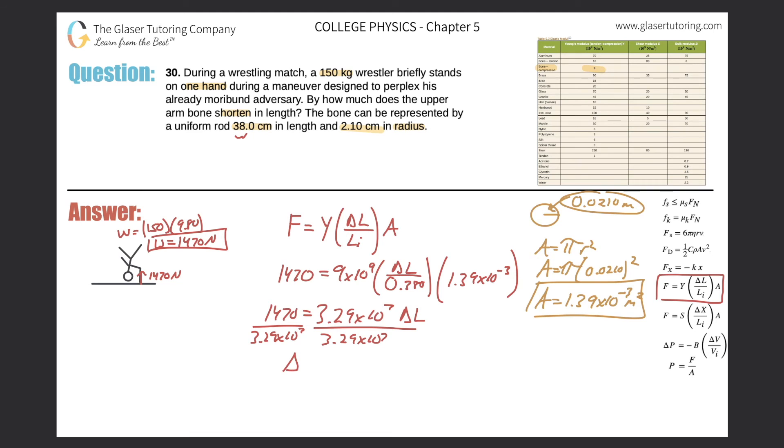And the change in length here will be 1470 divided by 3.29 times 10 to the 7, and we get 4.47 times 10 to the negative 5. That is in meters. So that would be the change in length of the humerus.